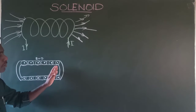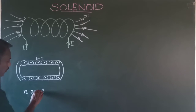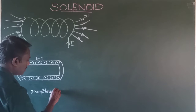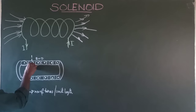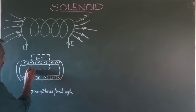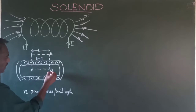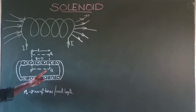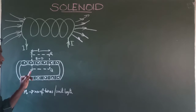Let N be the number of turns per unit length of the solenoid. Now let us take an Amperian rectangular loop of length L here. The length of this loop along the axis is L. When electric current flows through this rectangular Amperian loop, each line segment will produce a magnetic field around it, and we calculate the magnitude of the magnetic field for each line segment.